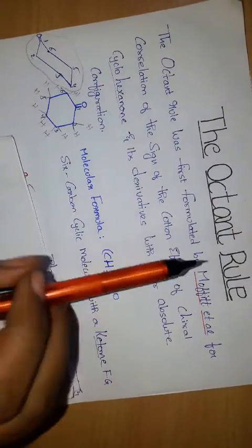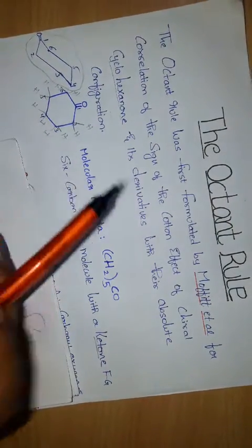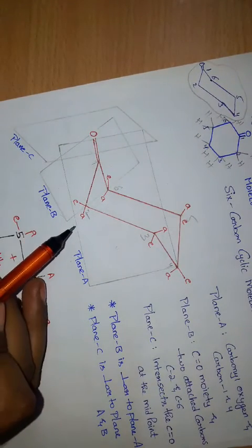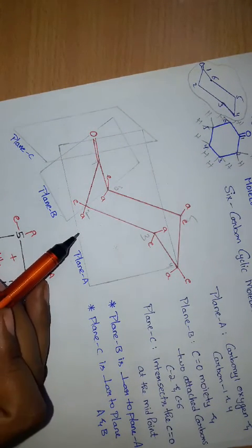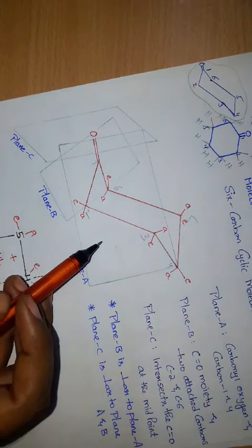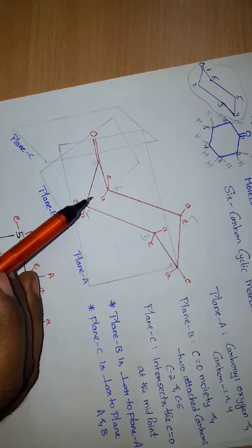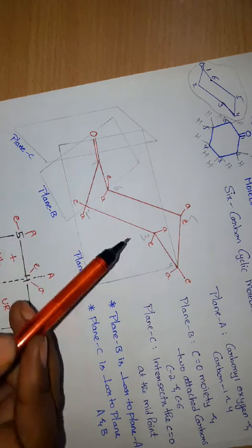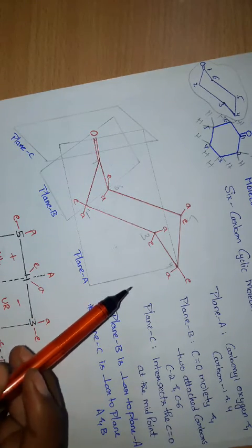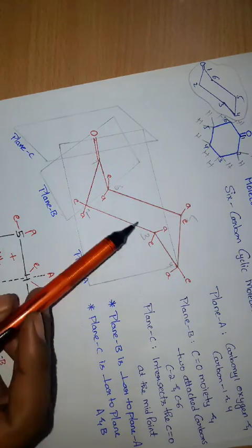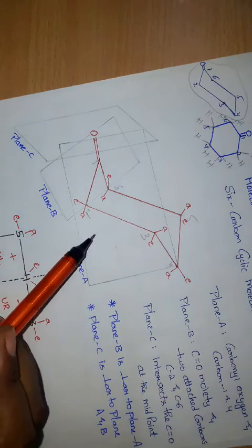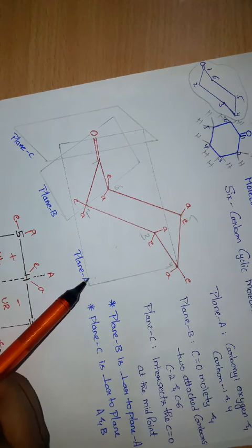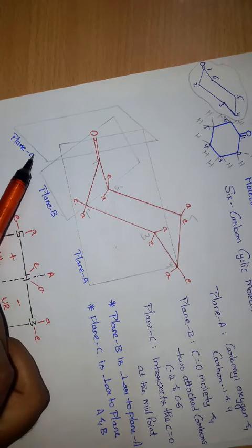For the explanation of the Octant Rule, chair conformation is considered. The space around the carbonyl group is divided into 8 sectors, also known as octants, about the X, Y, and Z axes with the help of 3 mutually perpendicular planes: Plane A, Plane B, and Plane C.